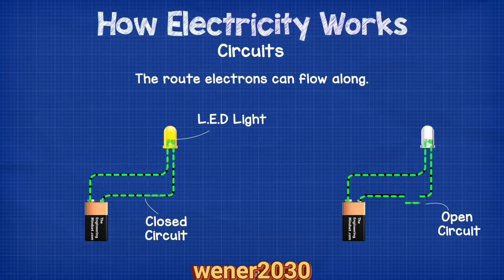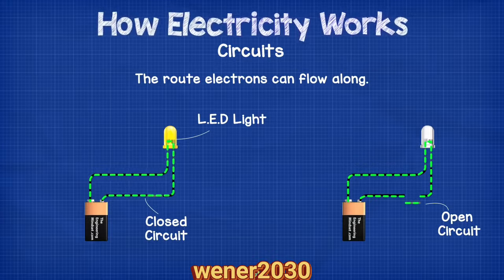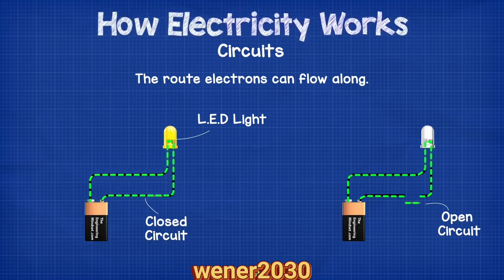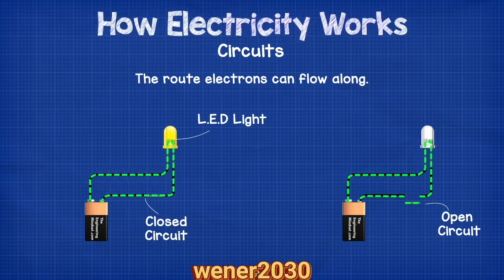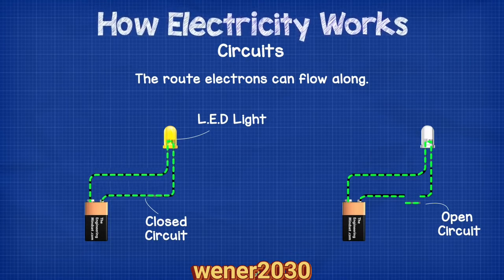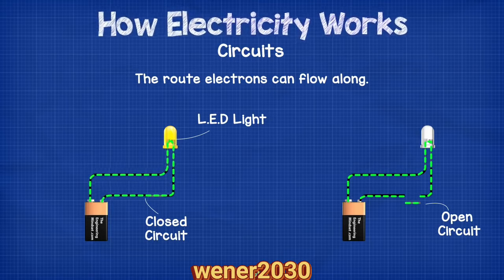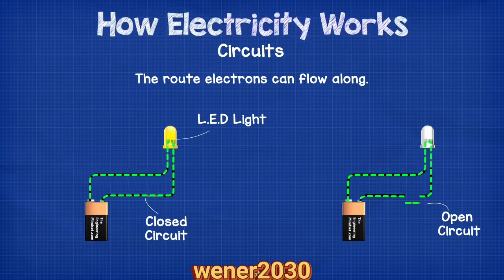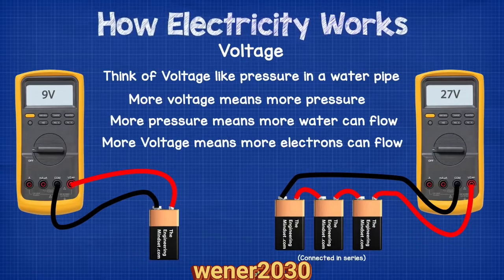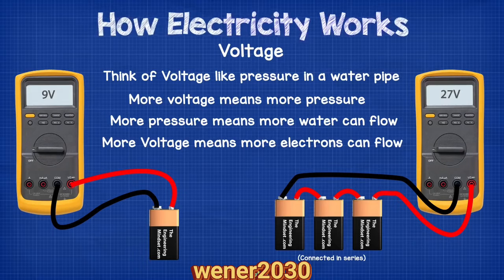We can add things into the electrons' path, like light bulbs, and this means that the electrons will have to pass through these in order to get to the other terminal — so we can use this to create things such as light. The circuit can be open or closed. In a closed circuit the electrons can flow around, and in an open circuit the electrons are not able to flow.